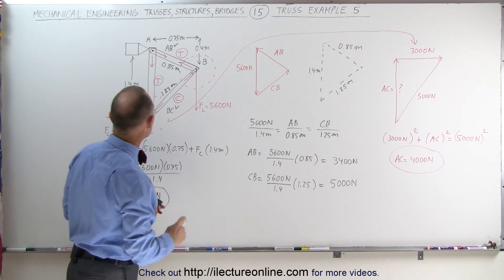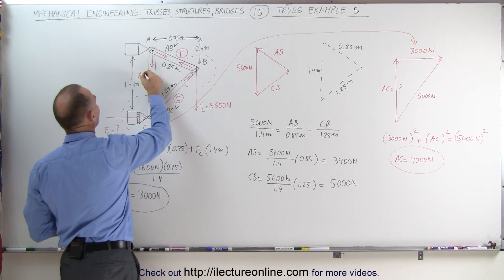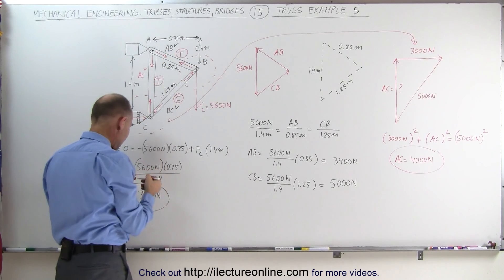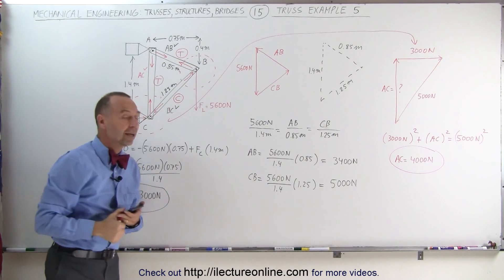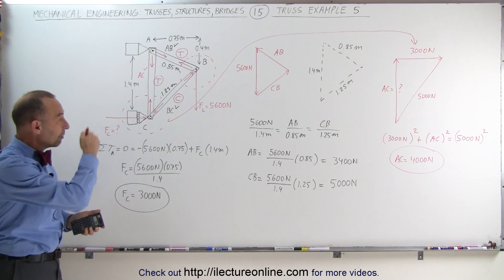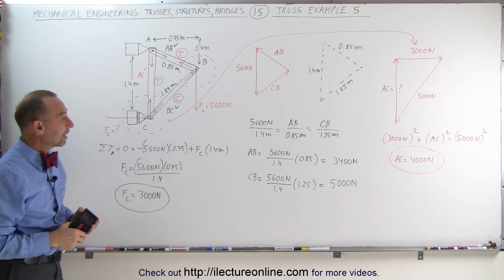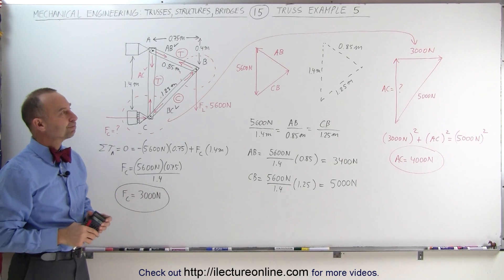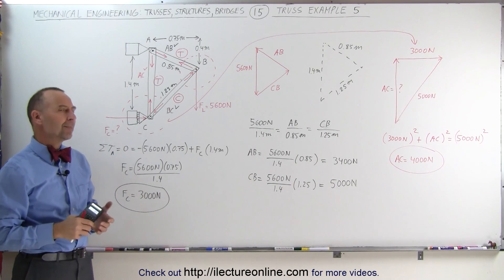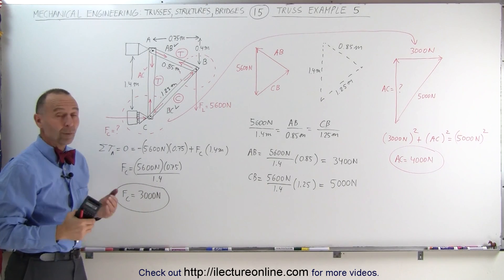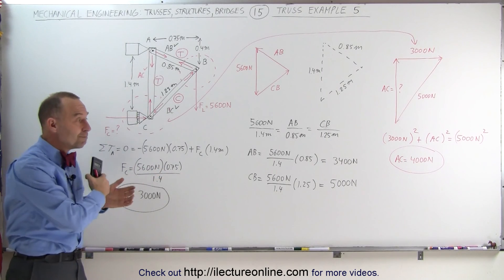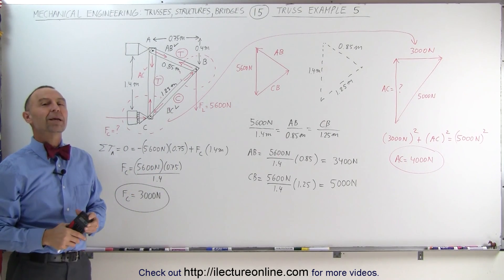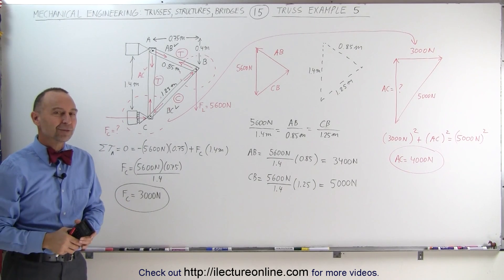We now have all three members: AC, AB, and BC, as well as F sub C. As you can see, when you follow that structure and technique, it is not that difficult to solve a simple truss like this. You may wonder about more complex trusses with many members all chained together — that will be coming up in our next several videos.